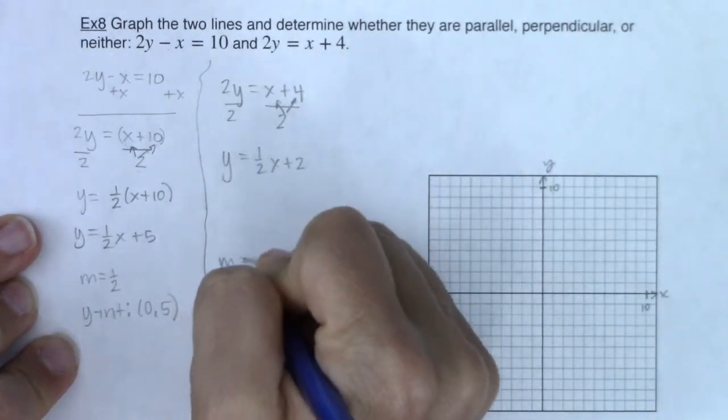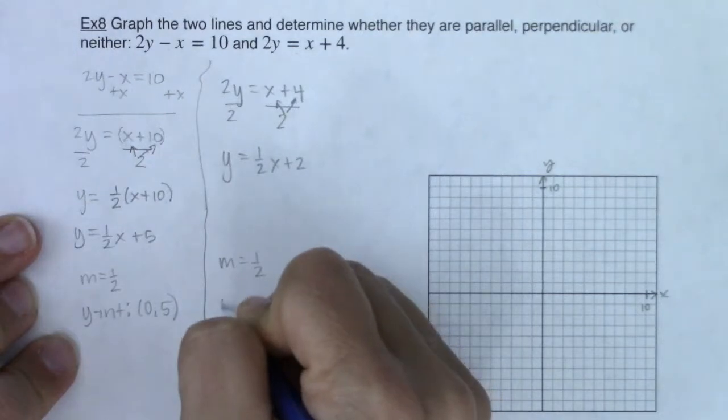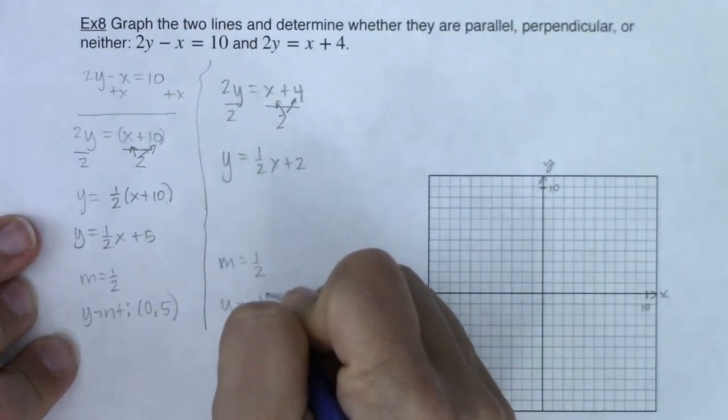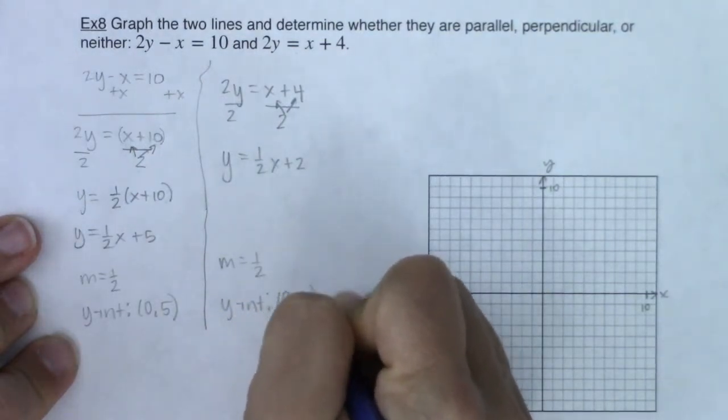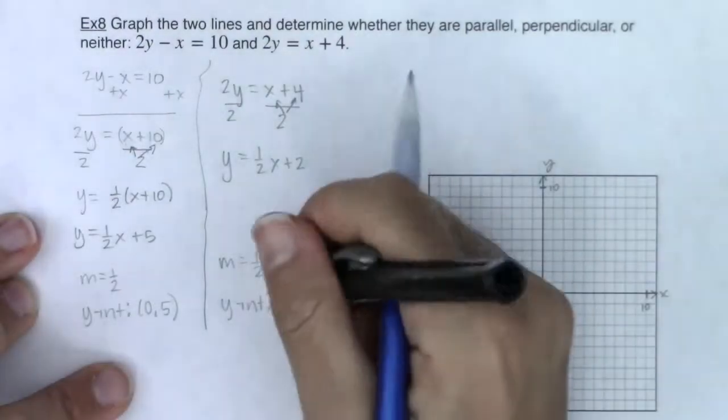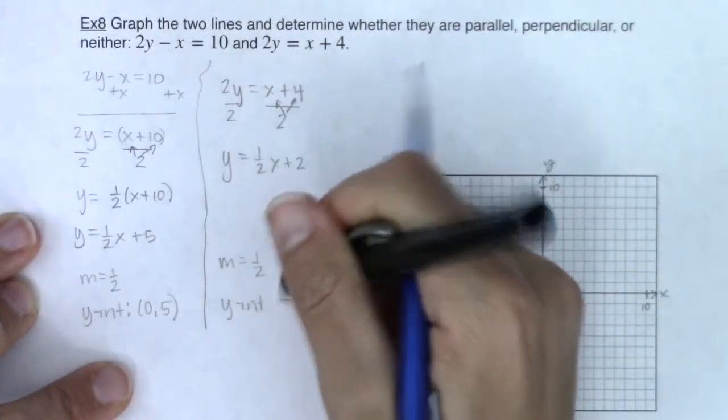So here I can see the slope is 1 half and I can see the y-intercept is the ordered pair 0 comma 2. That looks a little funky. Let me erase this and rewrite it better.